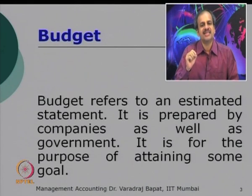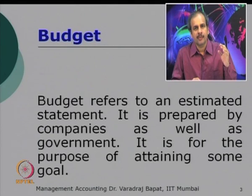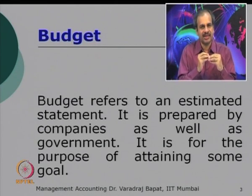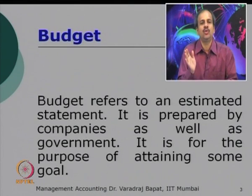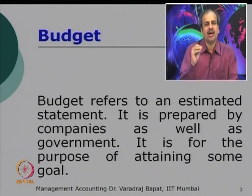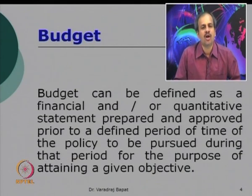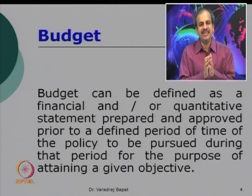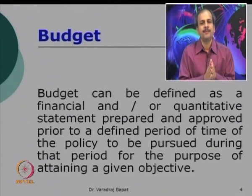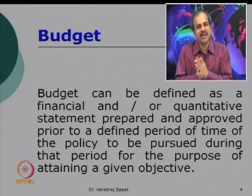The third aspect of budget is that it is prepared for attaining some goal. We set priorities, decide objectives, and accordingly decide to spend money or use resources — all of this is reflected in the budget. Now let us see the formal definition of the budget.